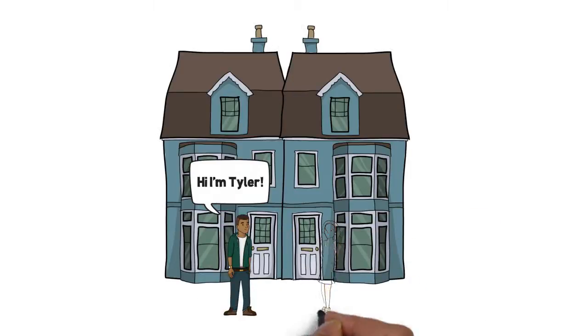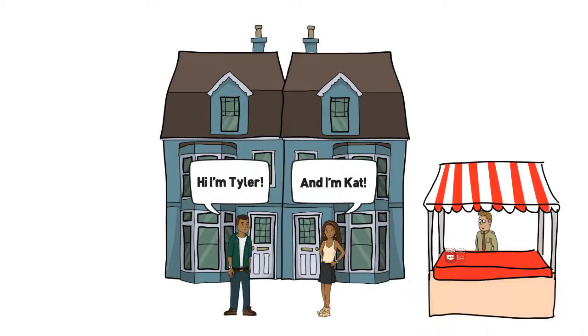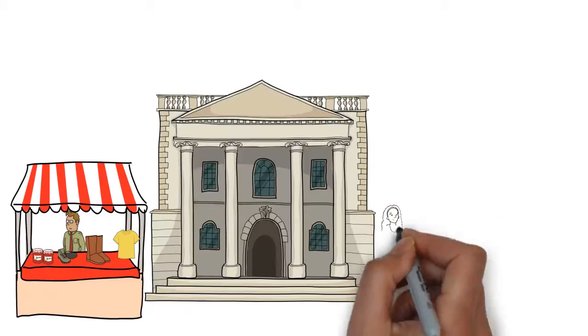Kat and Tyler are neighbors and they both live in the Lower East Side. They both like to shop, go out and explore their neighborhood.